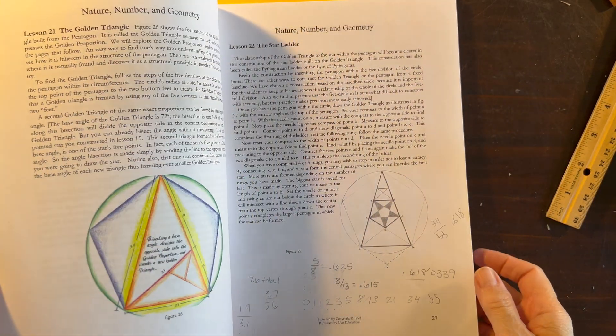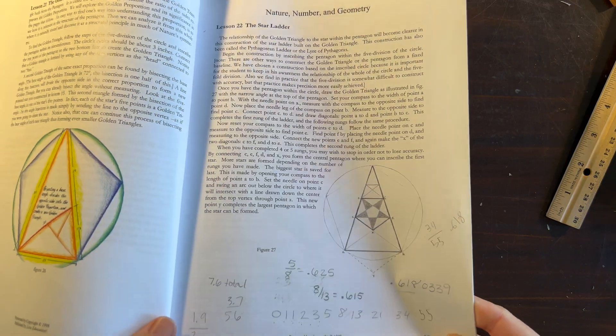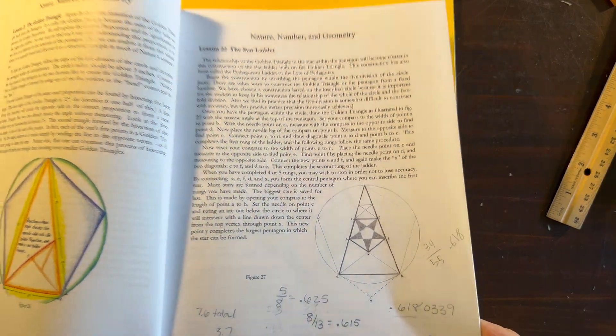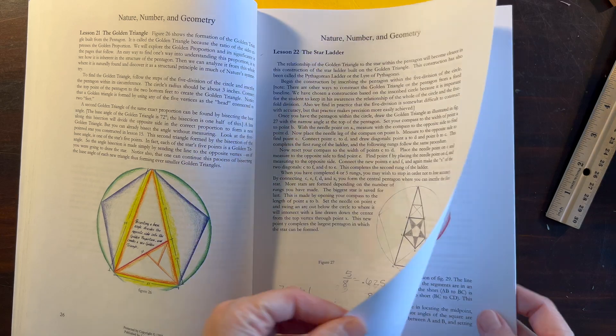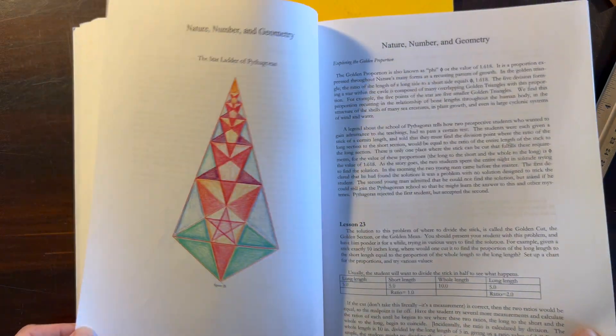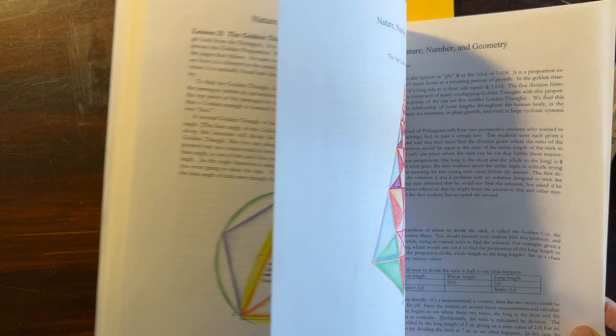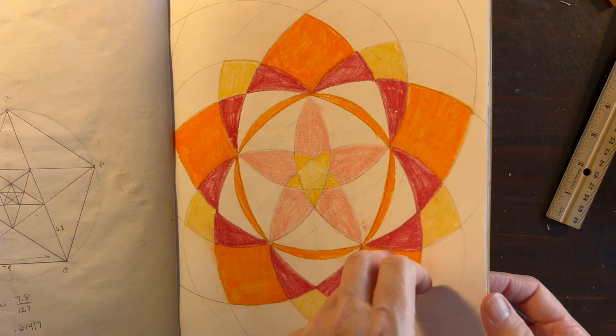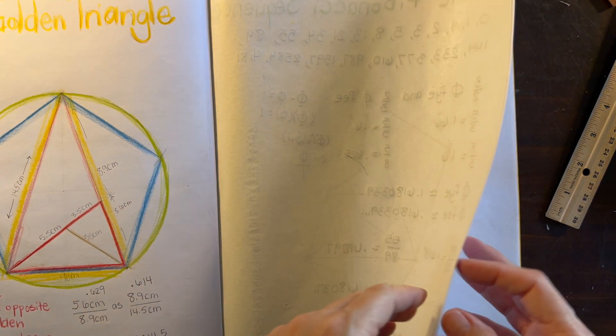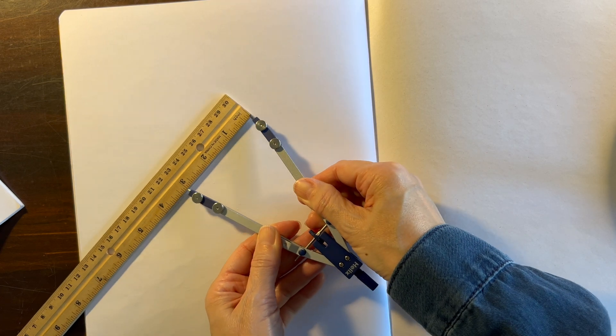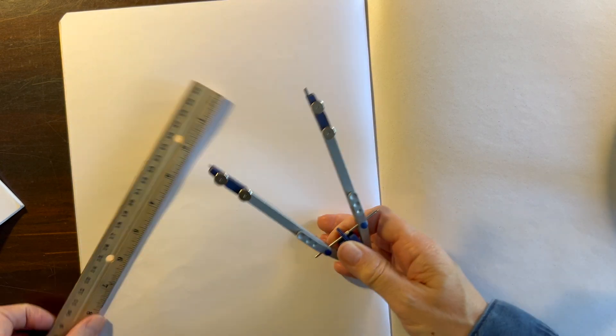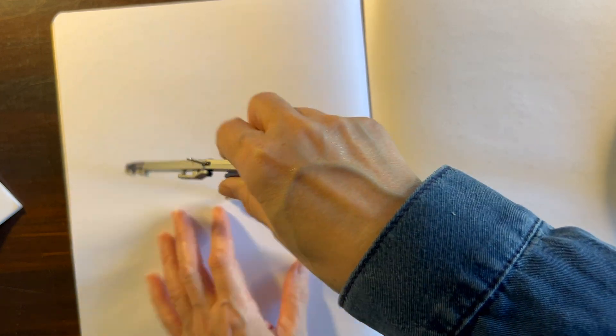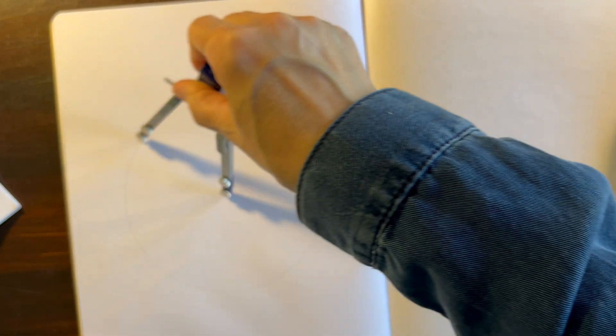We're using our Live Education Waldorf curriculum for geometry and today we're going to work on the star ladder. This one is a little bit more involved than our previous lessons. We are still going to work with five divisions of a circle. I'm using our main lesson books by A Child's Dream. These measure nine and a half inches by twelve and a half inches. I'm going to set my compass to about three inches and eyeball not quite the center of the page, just a little bit higher than the center.